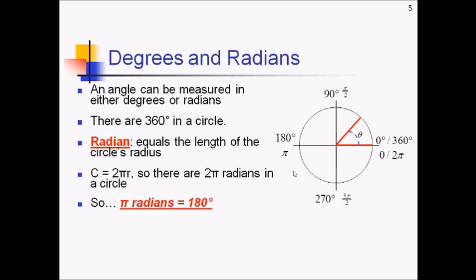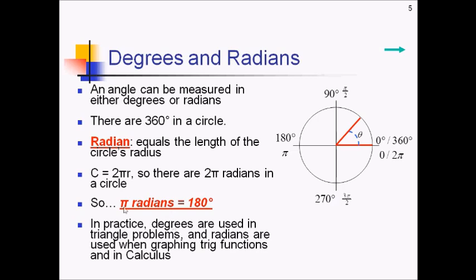Now a few of you might be wondering why we need radians. I mean, degrees seem to work perfectly good for everything we've done up to this point. Degrees are usually used in triangle problems, and we'll continue to use them there. But radians, we're going to find, are very helpful when we graph trig functions and for pretty much everything in calculus. All of the different rules and formulas in calculus assume that you're doing things in radians. So that's why we need them.